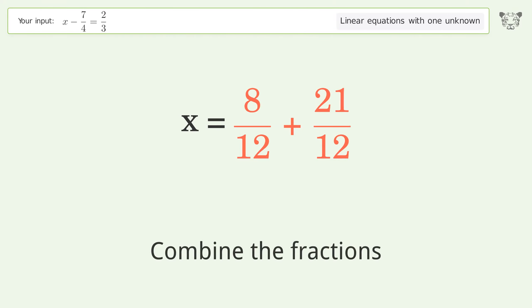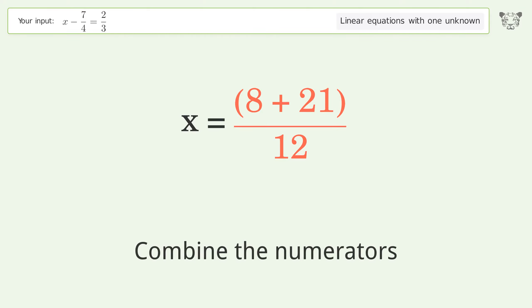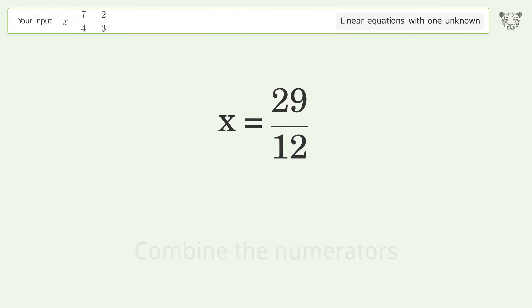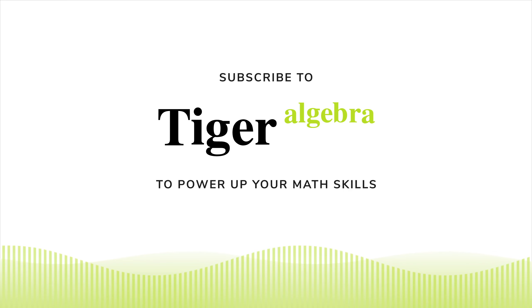Combine the fractions. Combine the numerators. And so the final result is x equals 29 over 12.